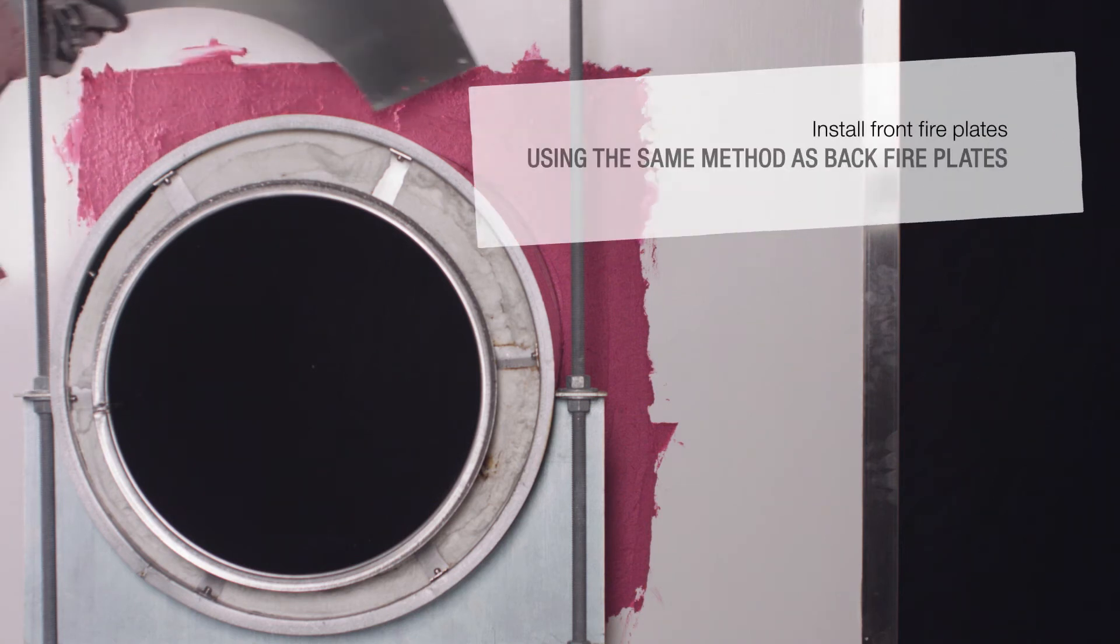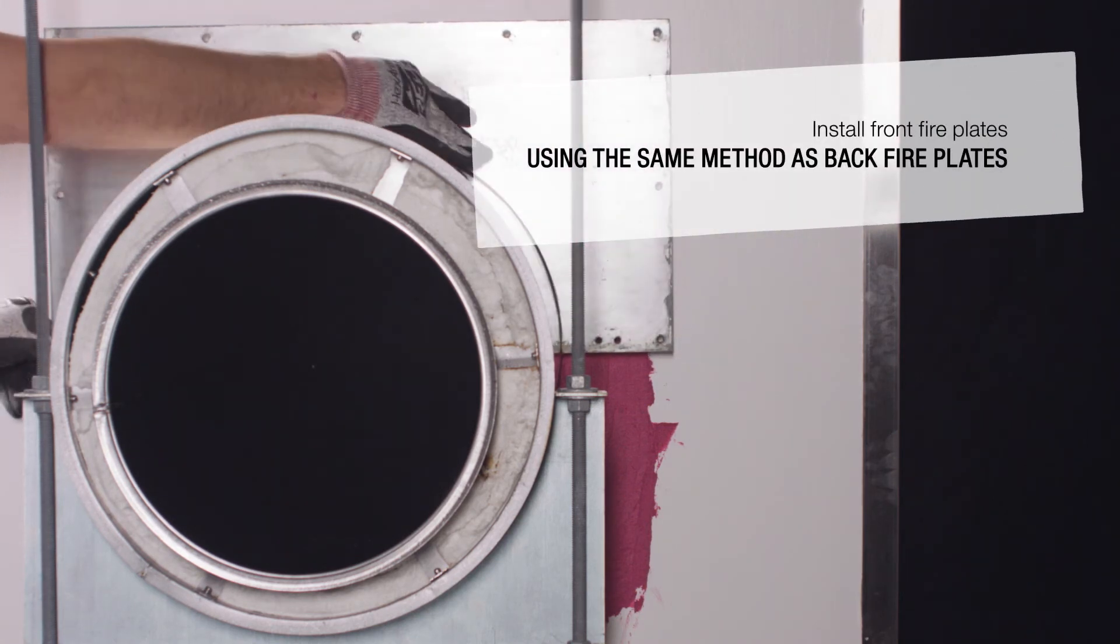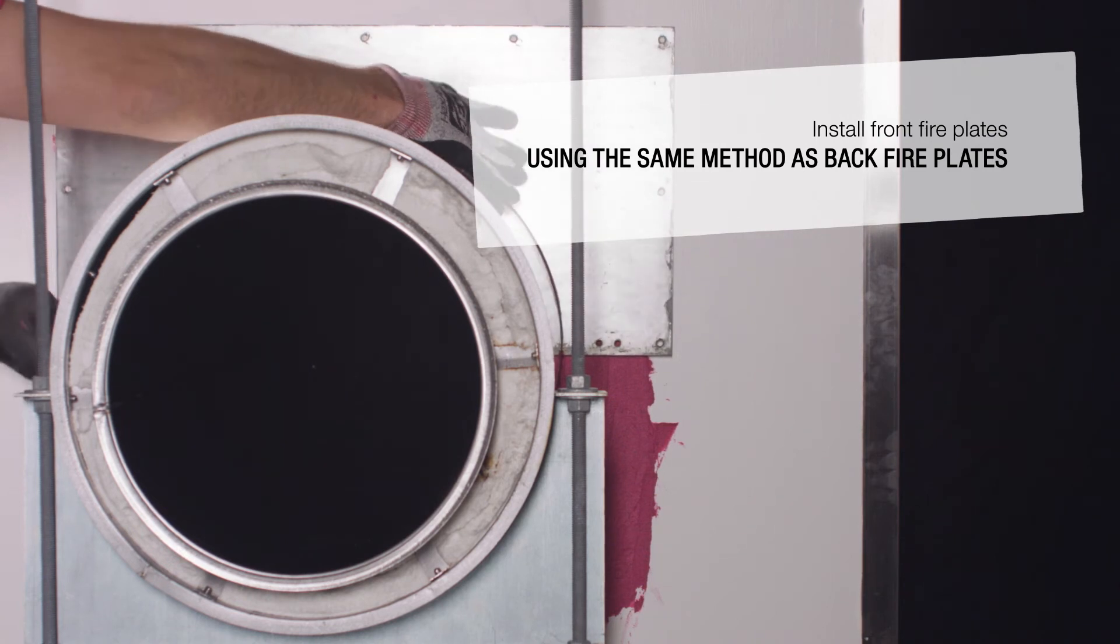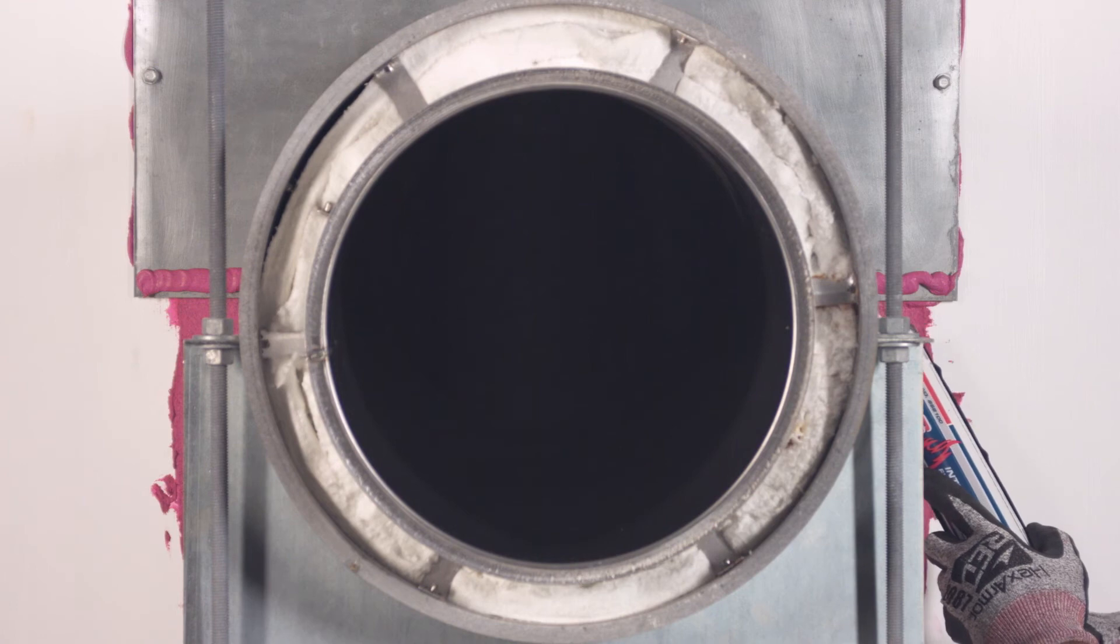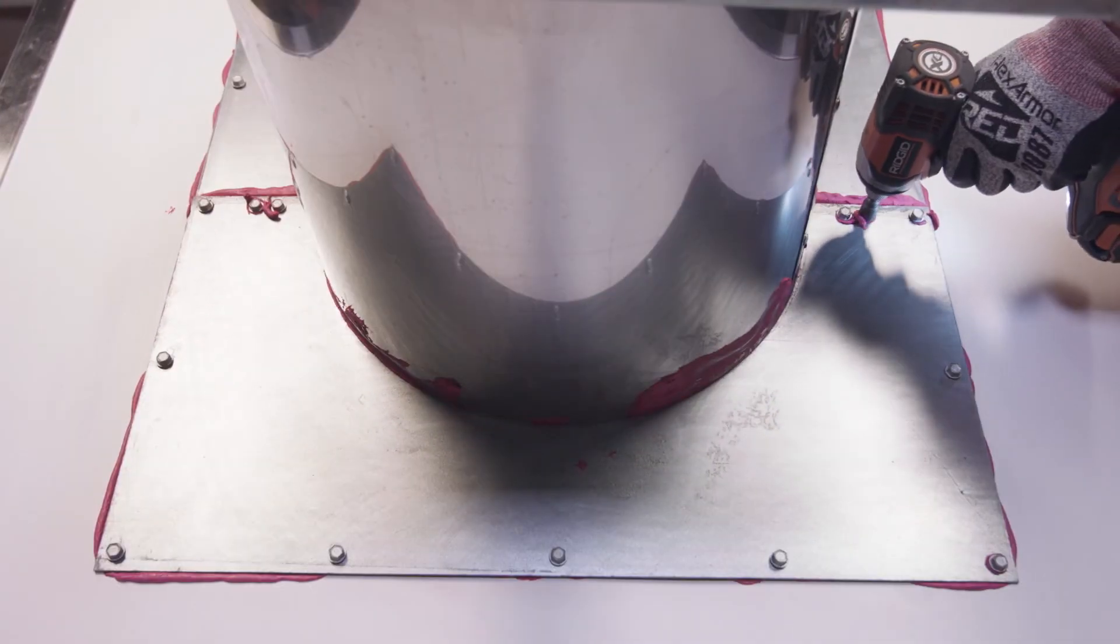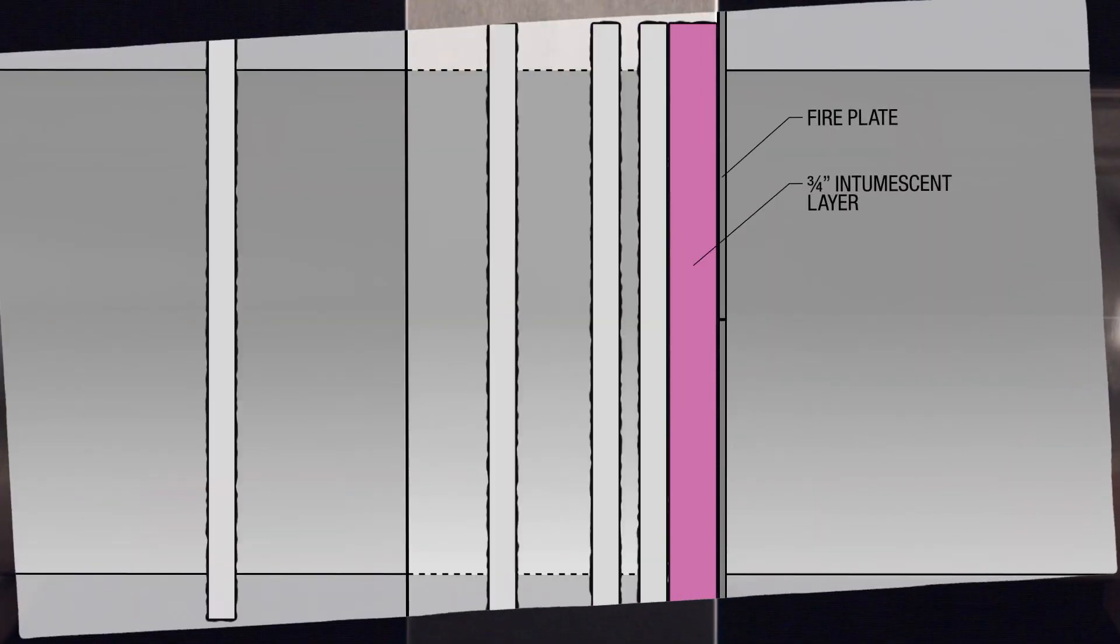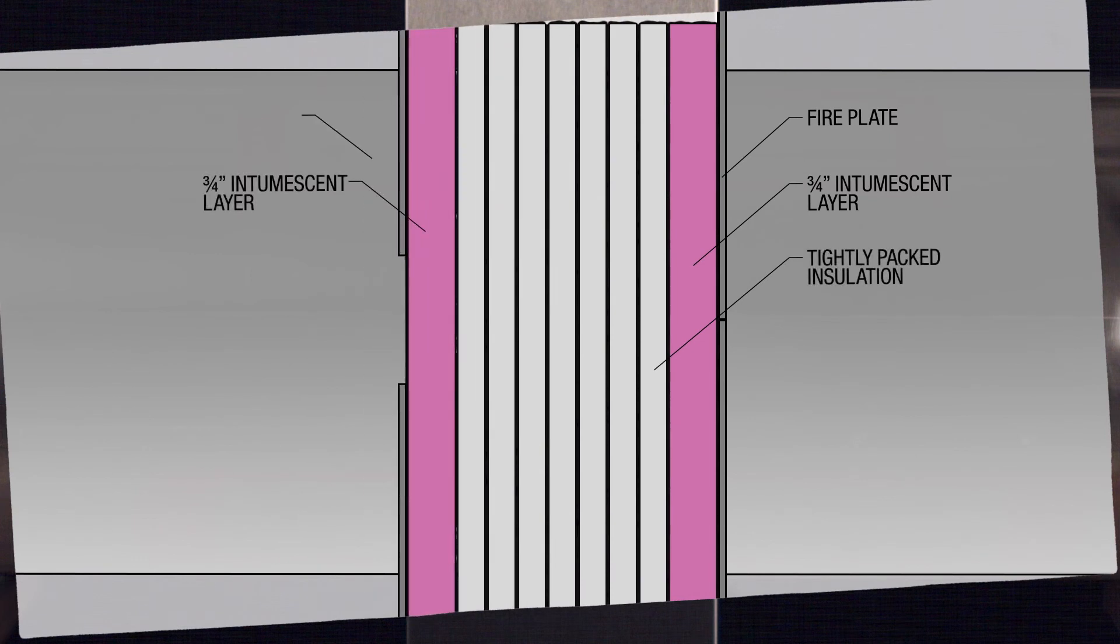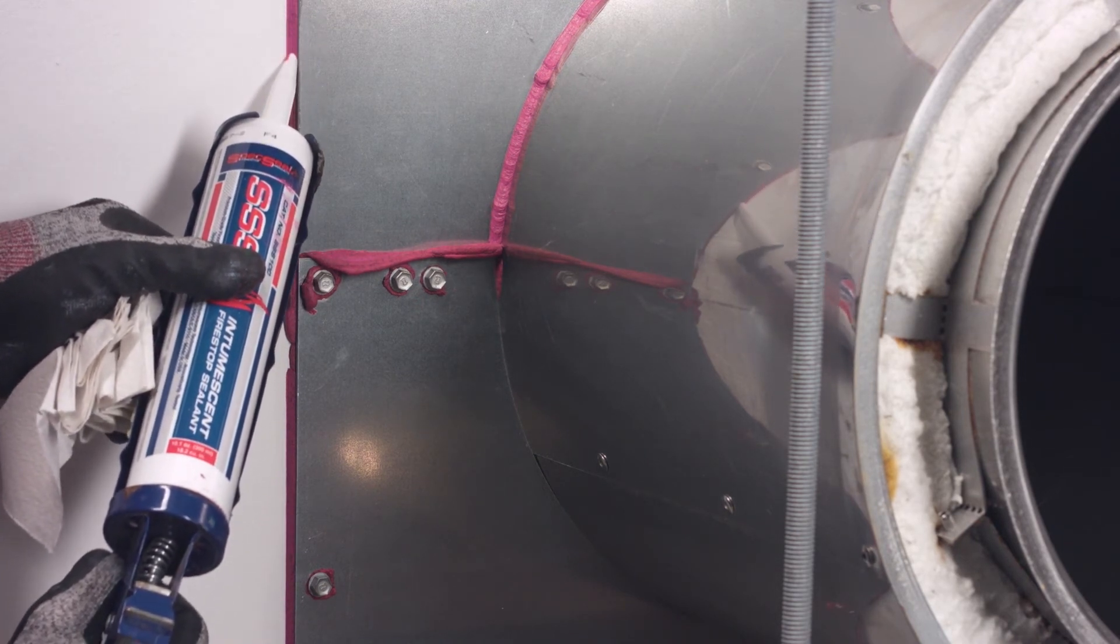Next, install fireplates onto the front side of the wall using the same method as the fireplates on the backside of the wall. This is the proper order for installing the fireplates, intumescent and insulation. Again, be sure to fill all gaps with STI SSS intumescent.